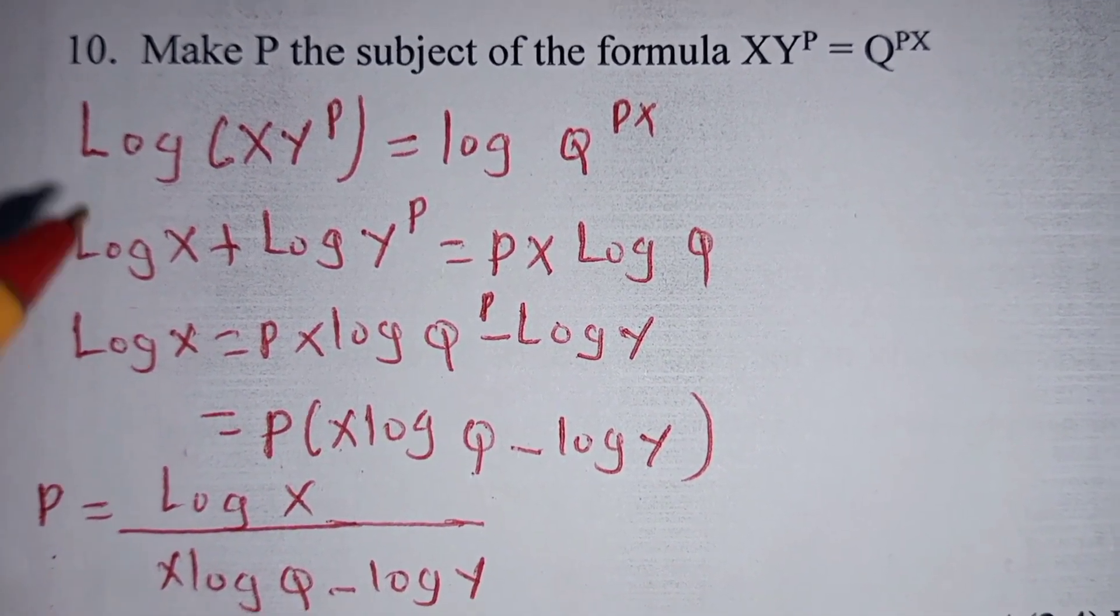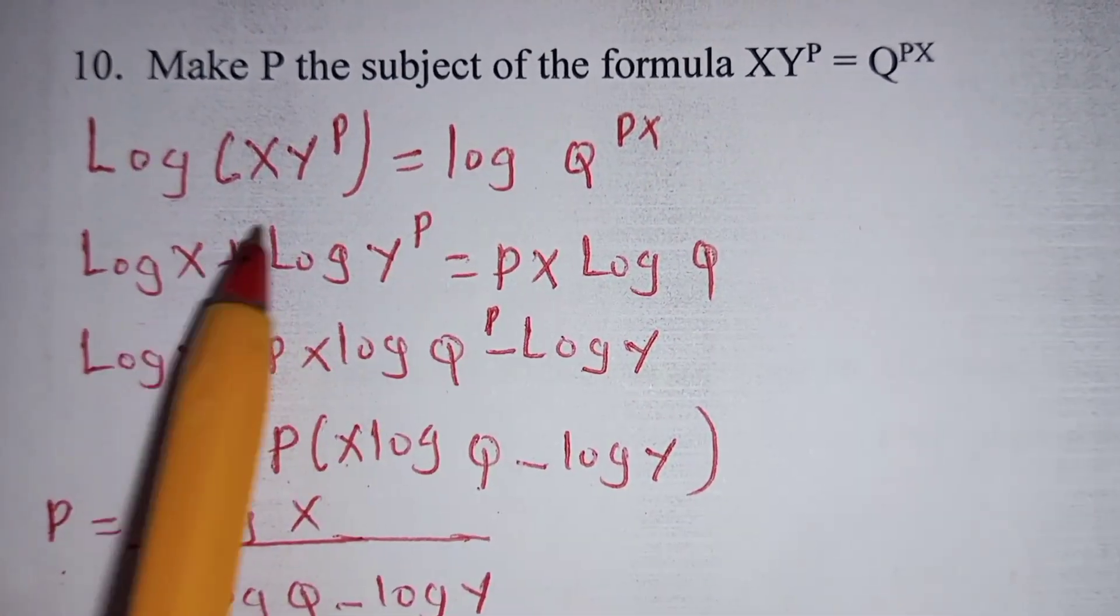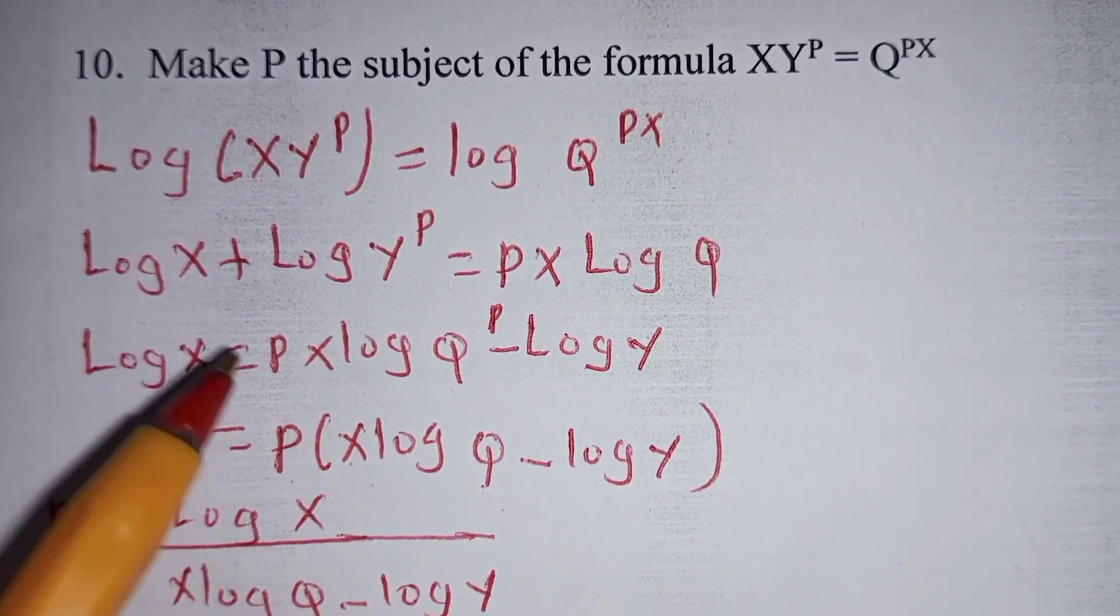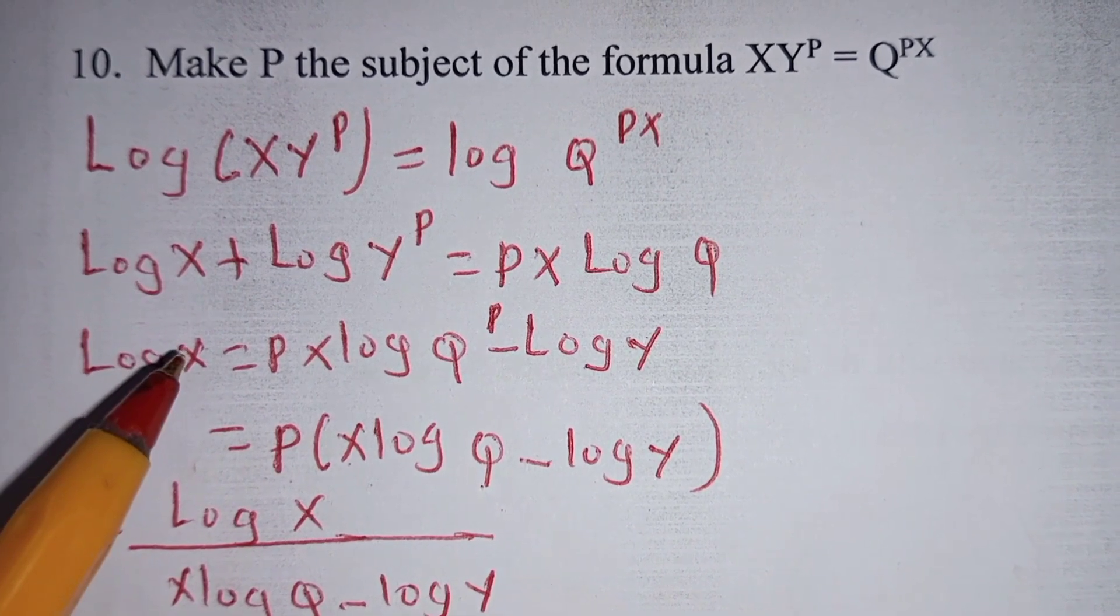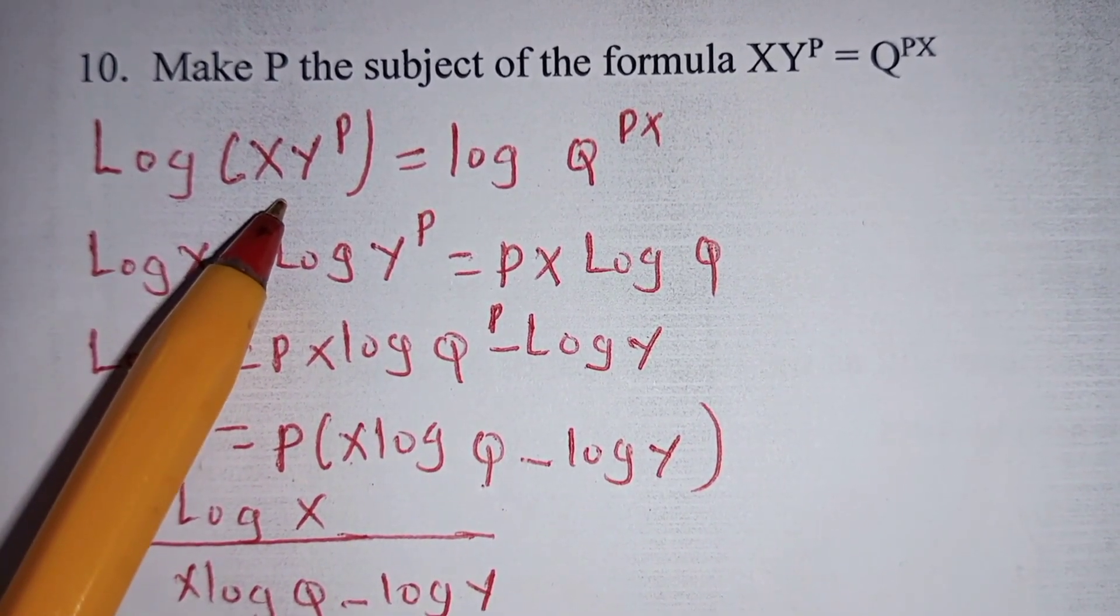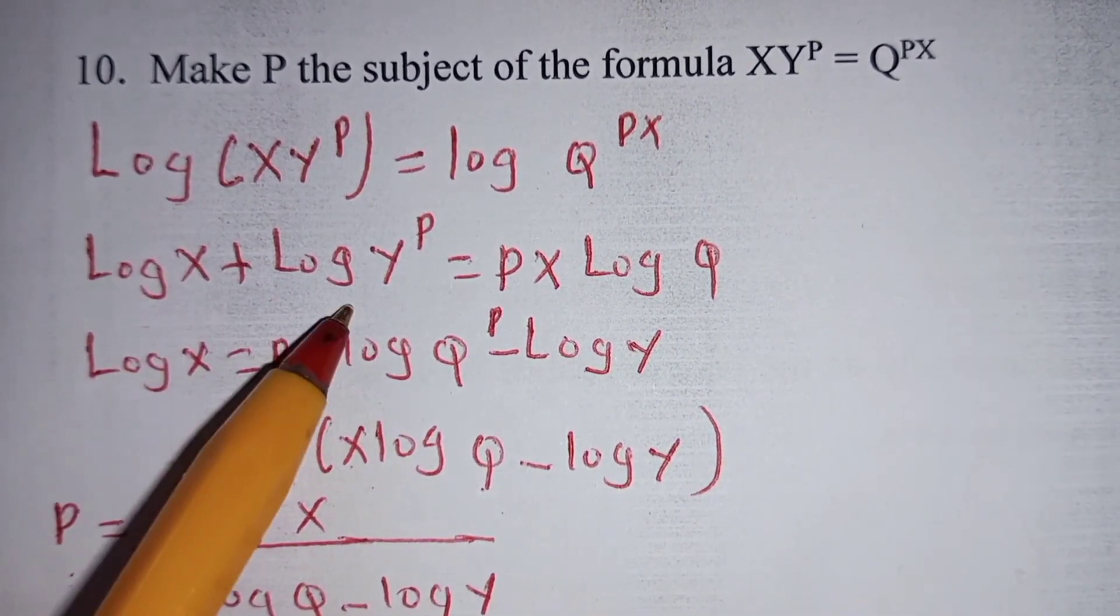So the recap. Take logarithm both sides of this equation. Also, make use of the product rule of logarithm. Whereby when you are multiplying two numbers and you take their logarithm, it is the same as adding them.